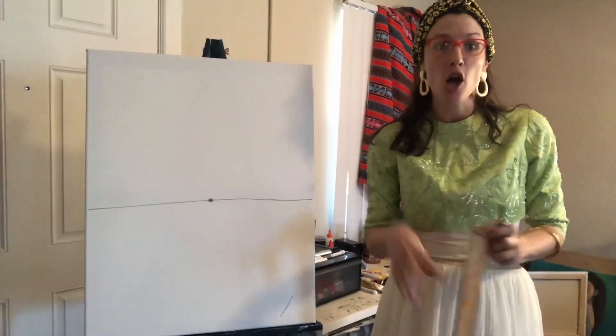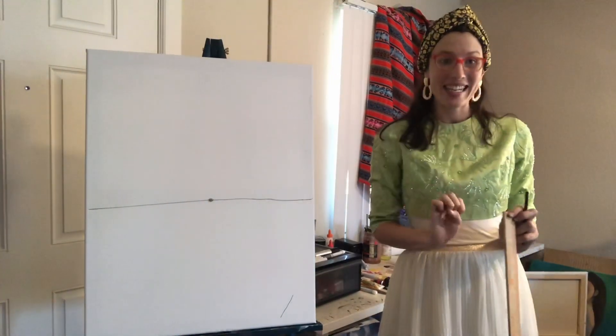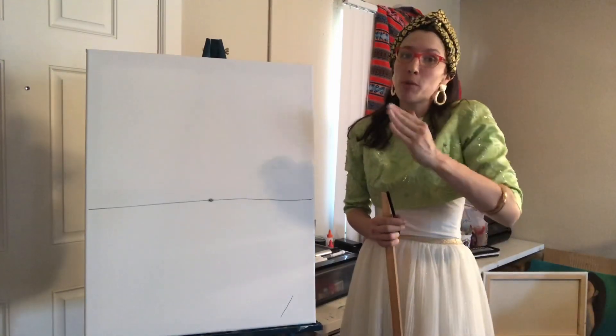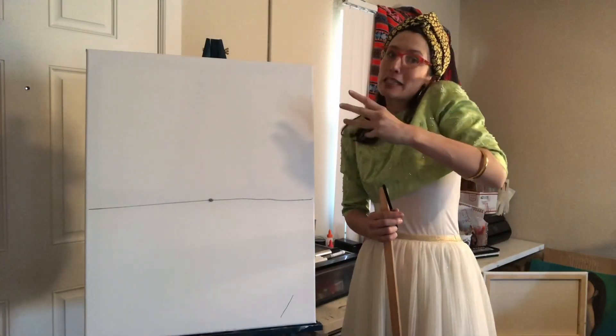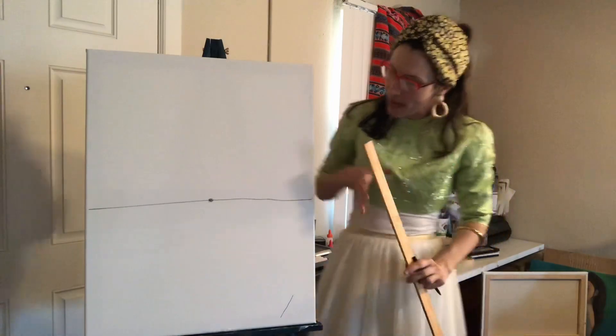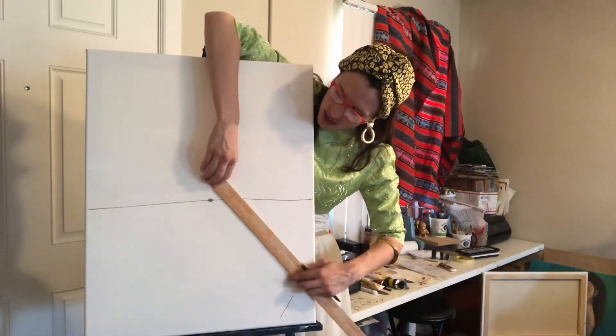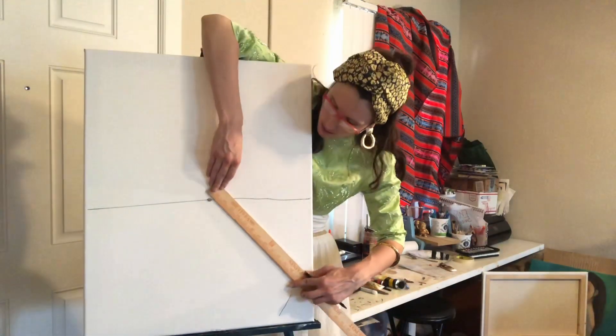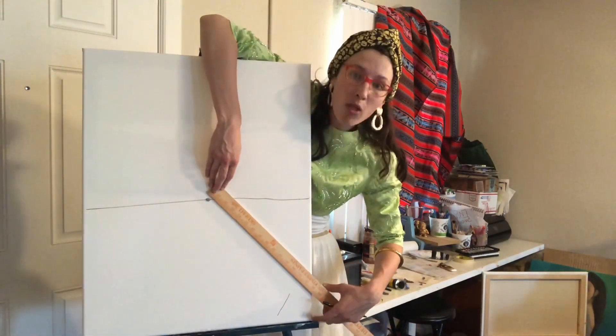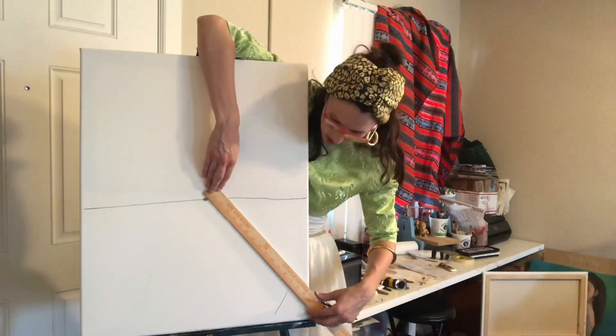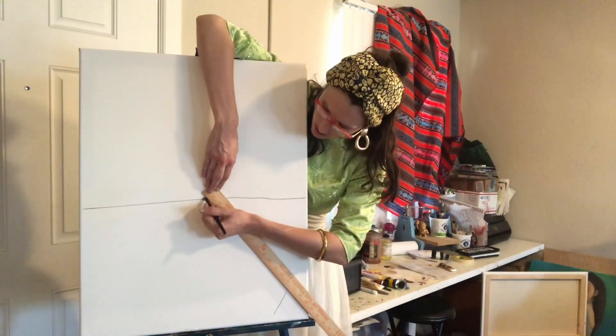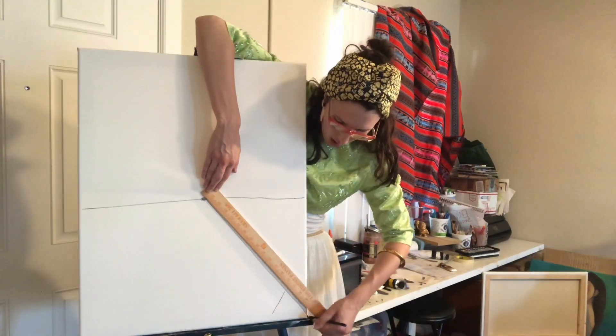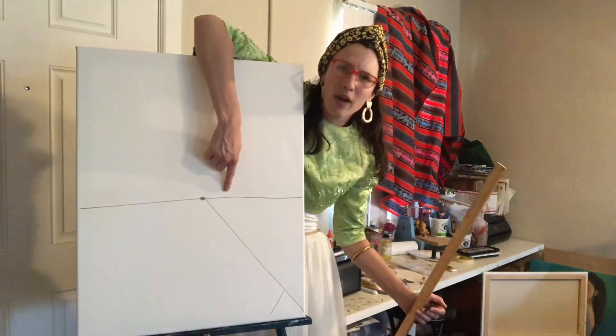Step number two, we need to draw two receding lines. That's going to guide us where to put our stuff, where it gets smaller and smaller and smaller. So you're basically doing two diagonal lines. I start right here at my vanishing point and I'm going to go all the way to the edge of my paper. I'm going straight down, not above my horizon line. I'm going all the way to the bottom.